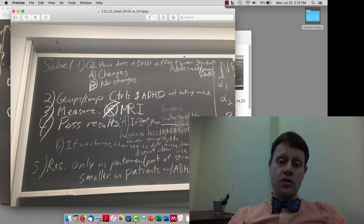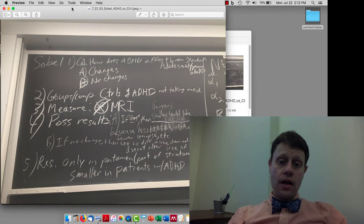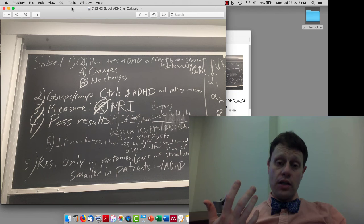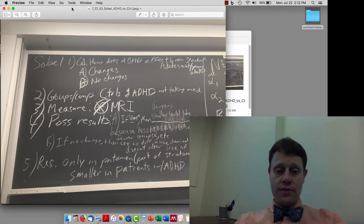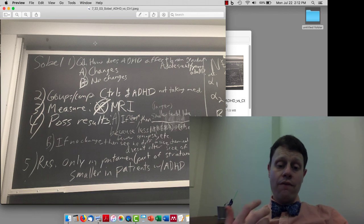We also talked about the Sobel study. In that study, they looked at how ADHD affects brain structures. Using regular MRI, not functional MRI to measure activity, just regular MRI to measure the volume and size of different brain structures, they found that compared to controls,